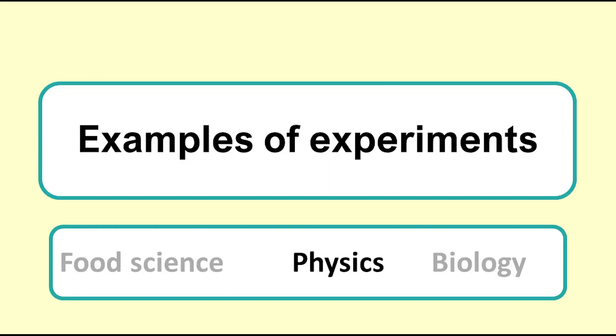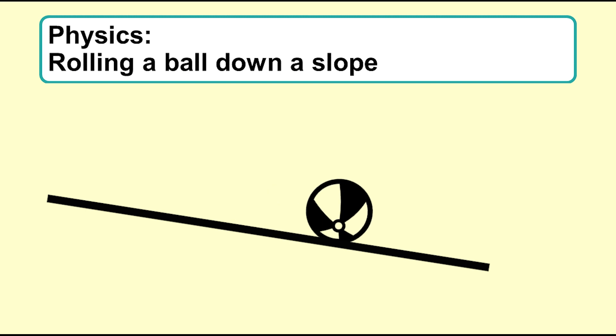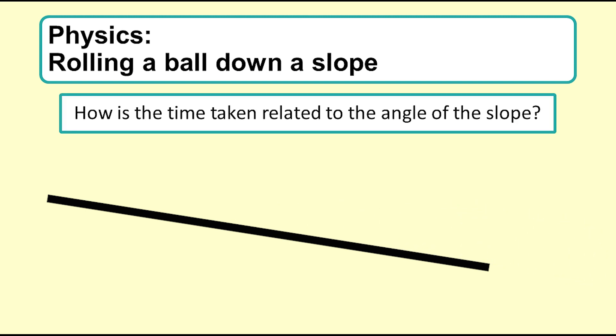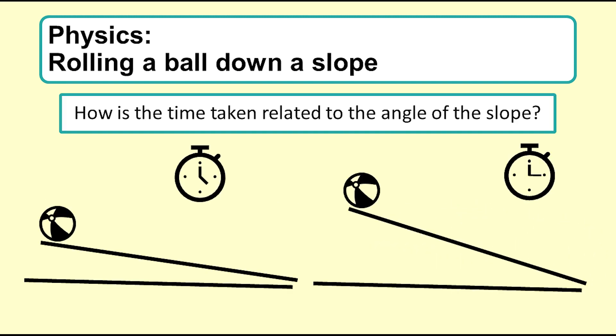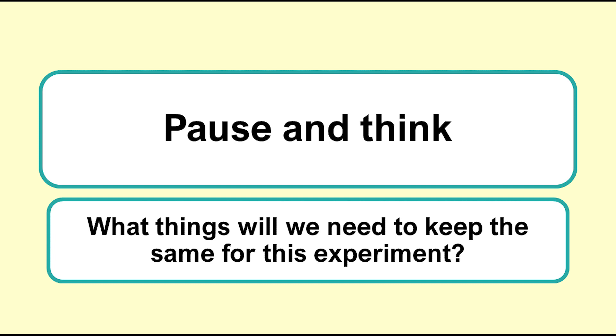Physics experiment: rolling a ball down a slope. In physics experiments we can generally control many aspects. We want to see how long it takes for a ball to roll down slopes at different angles. We will change the angle of inclination and measure the time taken to roll down the slope. Pause the video and think about what things we will need to keep the same for our ball and slope experiment.